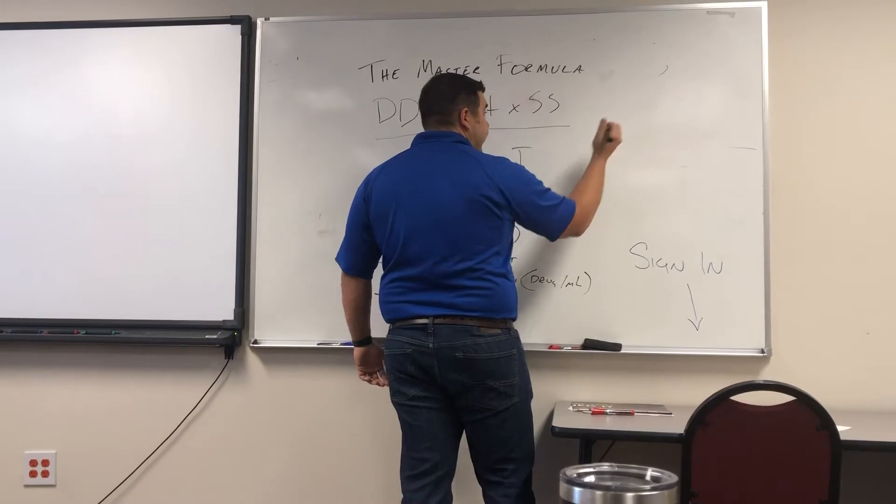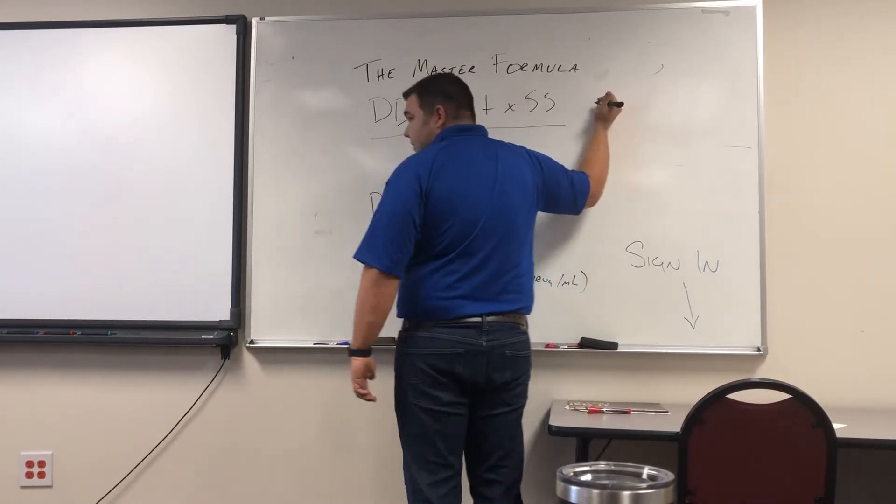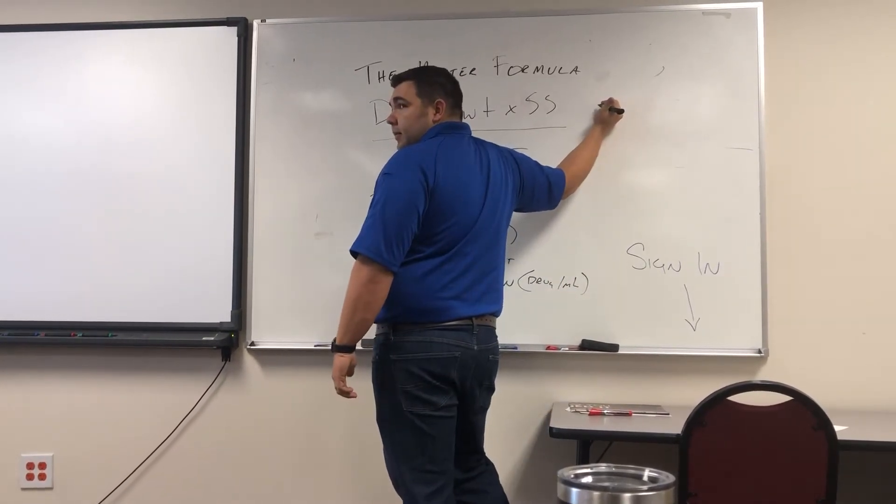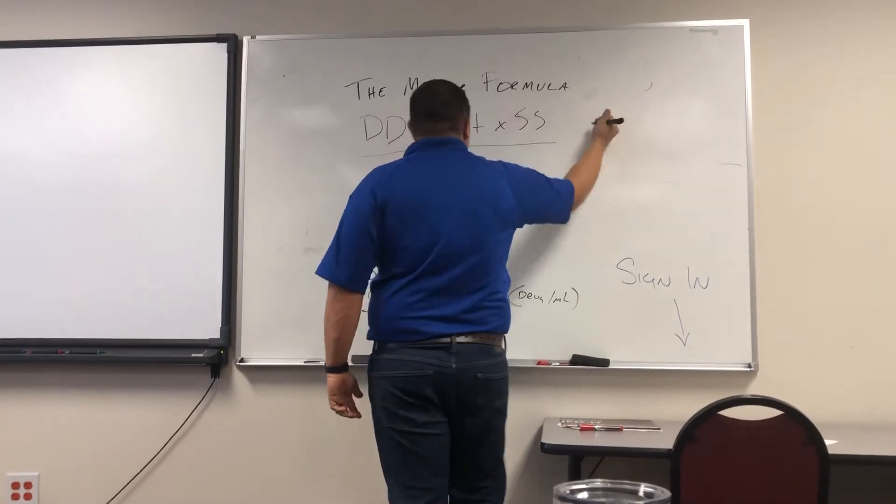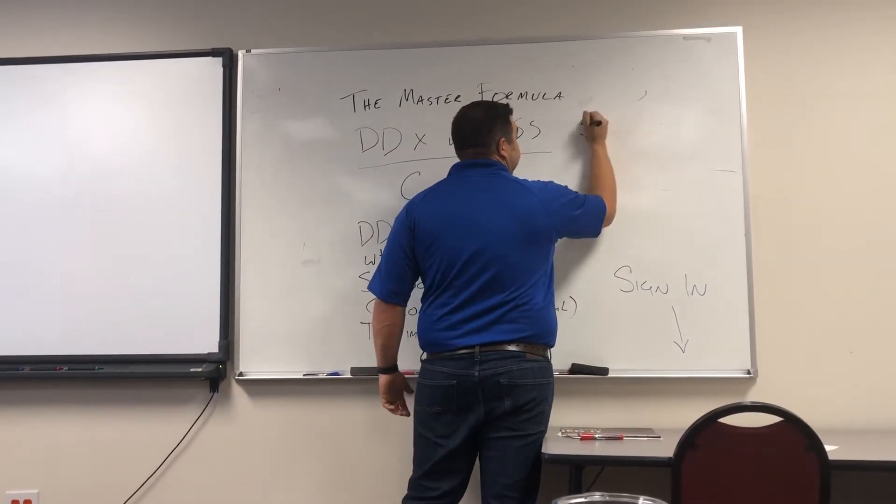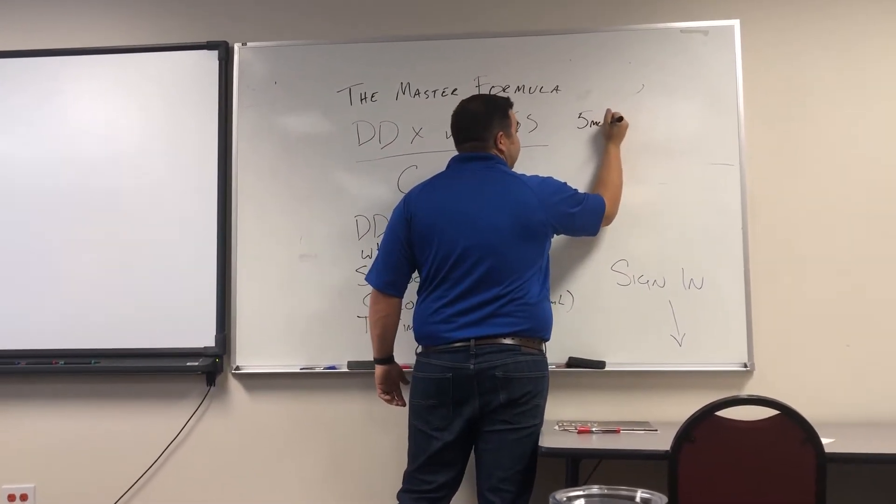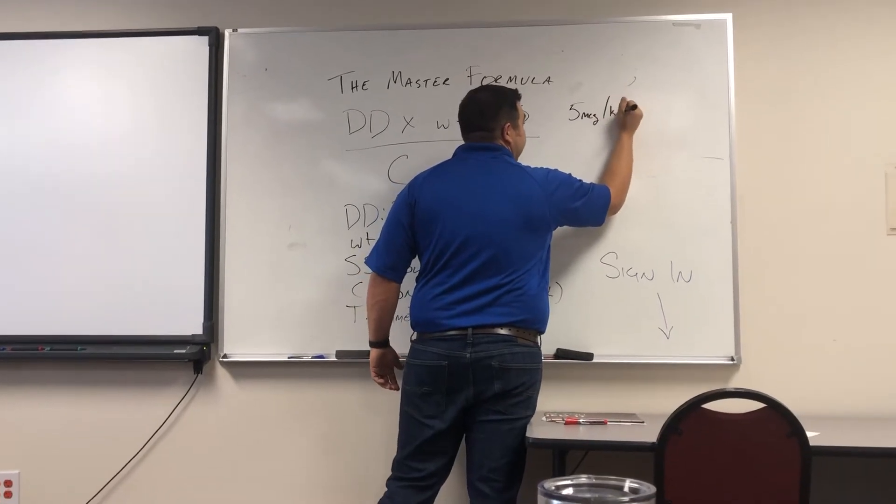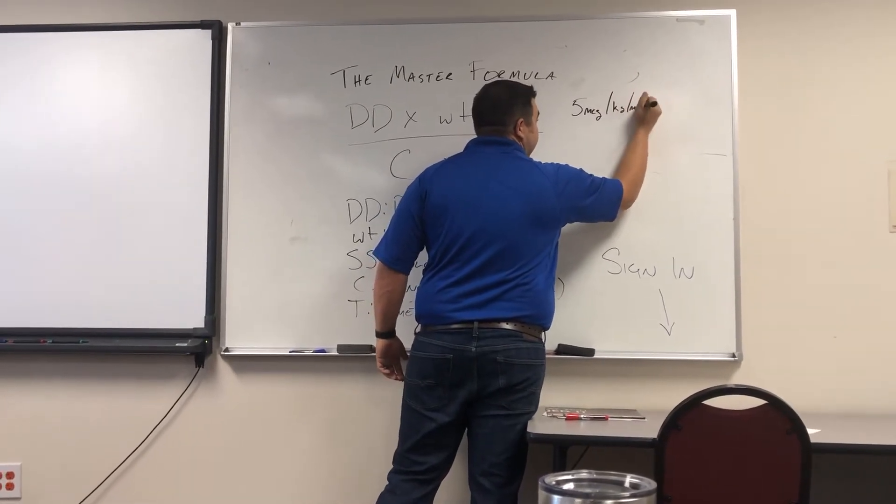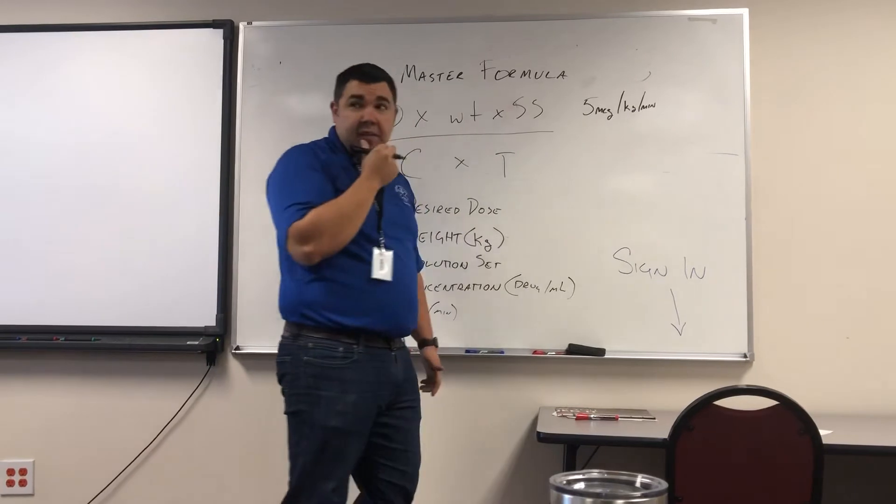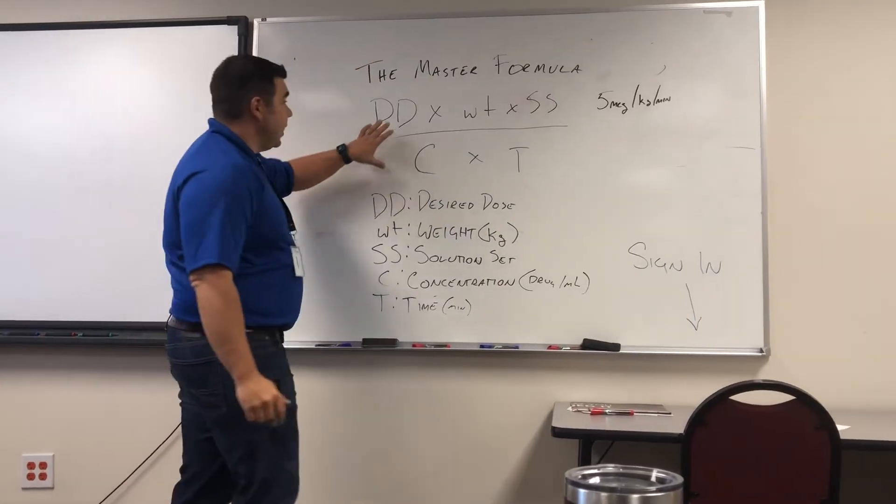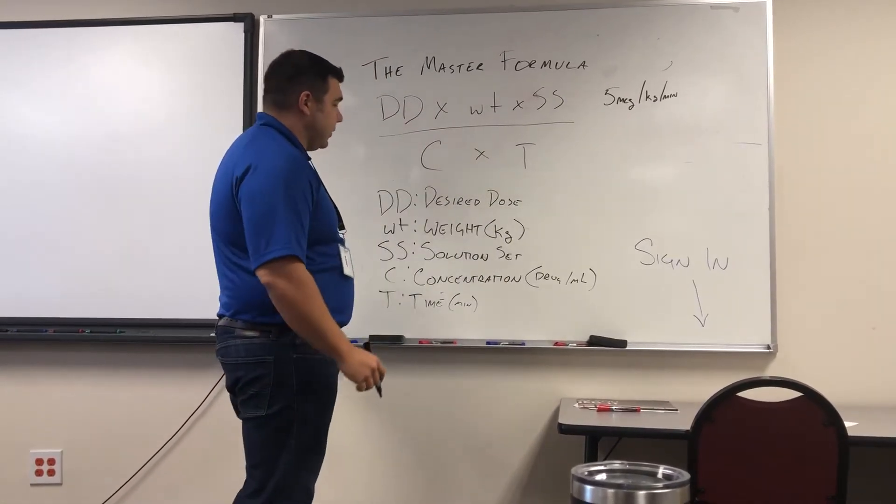What's our dopamine drip dose? Does anybody remember? It's a range, but we like to start at five micrograms per kilogram per minute. So it's weight-based and it's a drip. We're going to use every component of the master formula here.